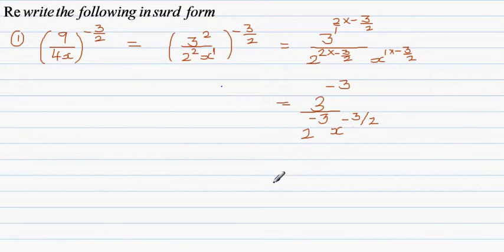Now you apply the rule of negative index: if you've got a negative index in the numerator, it goes to the denominator, and if you have a negative index in the denominator, it goes up. Basically it flips or swaps.